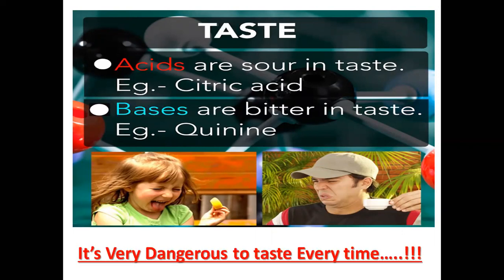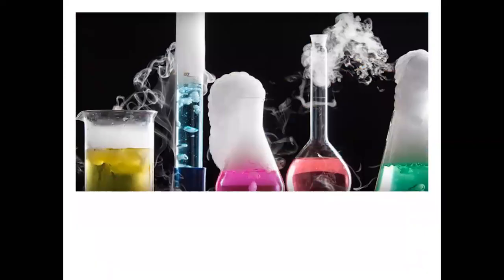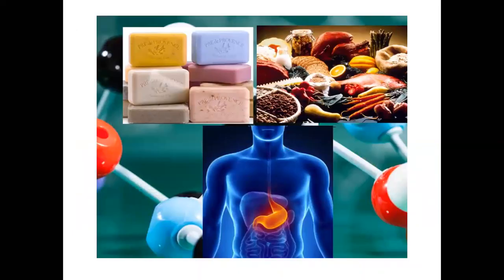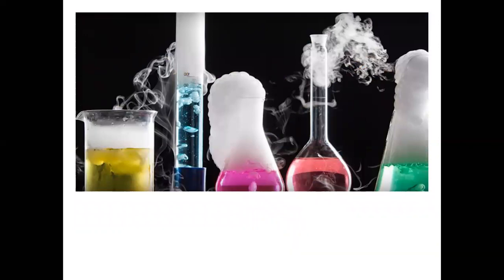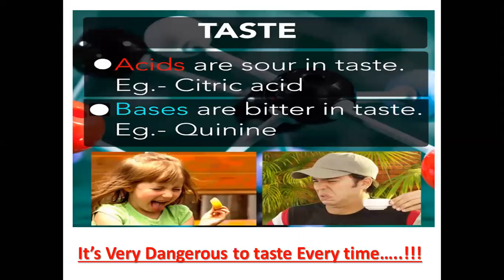So you will know that acid is sour and base is bitter. But you have to keep in mind — it is very dangerous to taste every time. You cannot taste every time. If it is concentrated acid, then it will burn you. So you cannot test concentrated acids and bases by taste. We can only know from taste, but we cannot use taste to identify every substance.